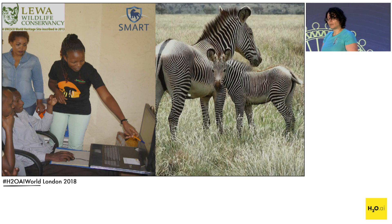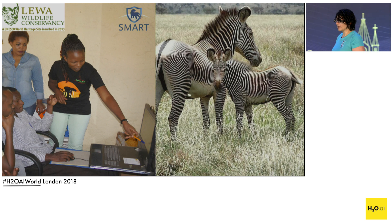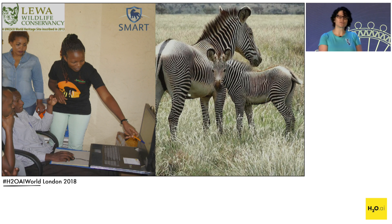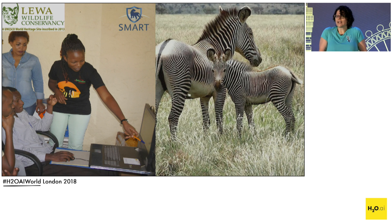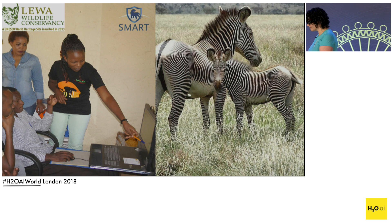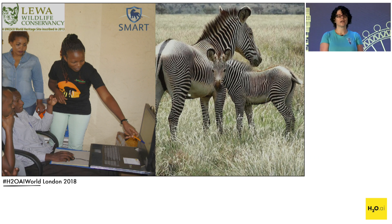The first deployment of Wildbook was at the Lewa Wildlife Conservancy in Kenya for Grevy's zebras, which is also the headquarters of the Grevy's Zebra Conservation Trust. With the information gathered there, they found that the number of baby zebras that do not survive to adulthood is too high — the ratio of adults to babies is off. The main culprit turns out to be lions. Conservation efforts have been so successful with lions that there are too many of them relative to the number of zebras. So with the data from Wildbook, they could start a population management program for lions, to put predator and prey back in balance — and the numbers are showing it's working.